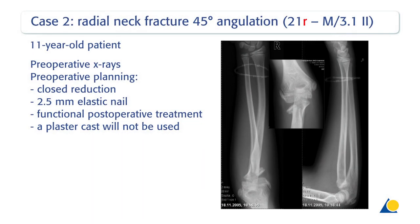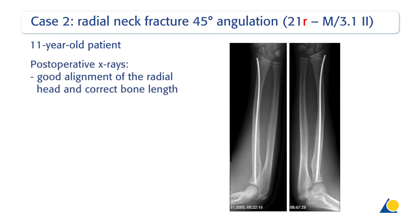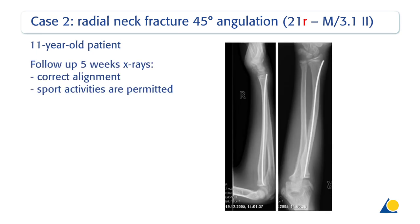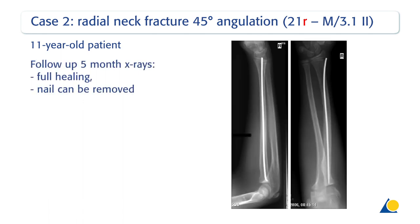Reduction and fixation of the radial neck fracture. The clinical case shows an 11-year-old patient with a radial neck fracture angulated 45 degrees, 21R-M-3.1-2. Pre-operative planning includes closed reduction, use of 2.5 mm elastic nail, functional post-operative treatment and no plaster cast applied. The post-operative x-rays show good alignment of the radial head and correct bone length. Five weeks post-operative fluoroscopy shows correct alignment and sport activities are permitted. Five months post-operative fluoroscopy shows full healing and the nail can be removed.